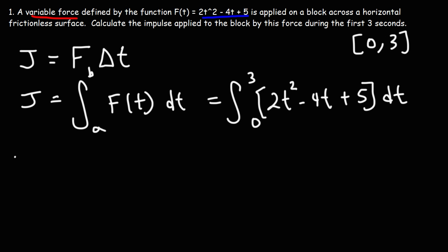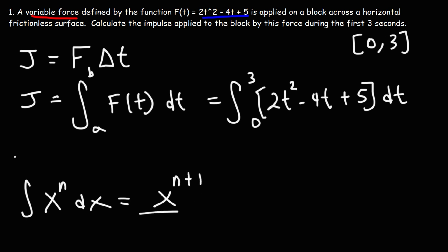Just to review: to take the integral of a variable raised to a constant using the power rule, the antiderivative of x to the n is x to the (n+1) divided by (n+1), and of course we add c, the constant of integration.